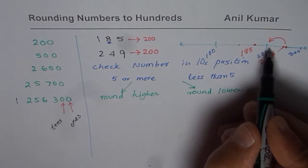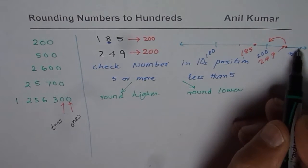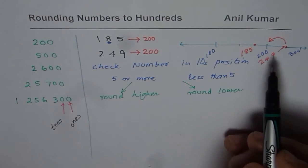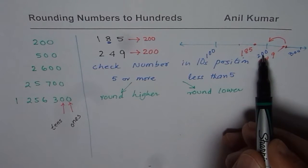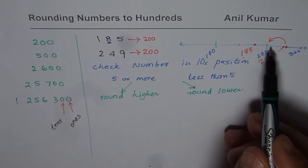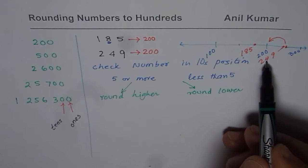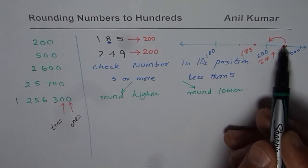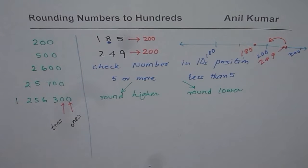So you are in between, let's say, 200 and 300. And if you have a number where the tens position is less than 5, then you round lower. For example, here tens position is 4, less than 5, you round lower.